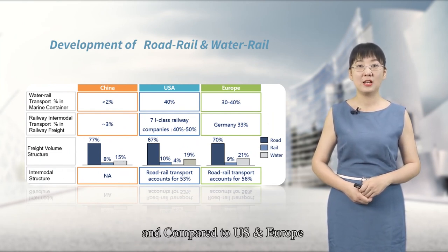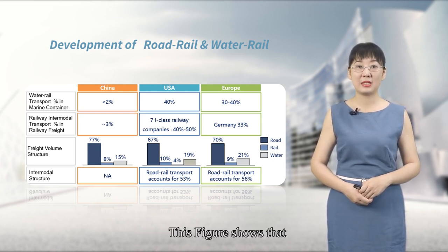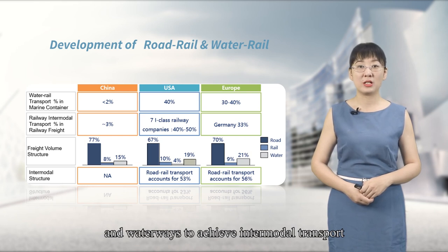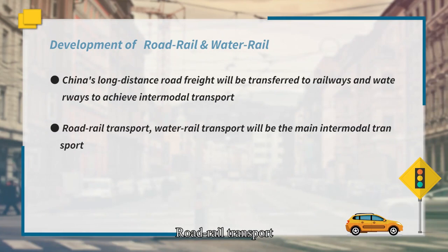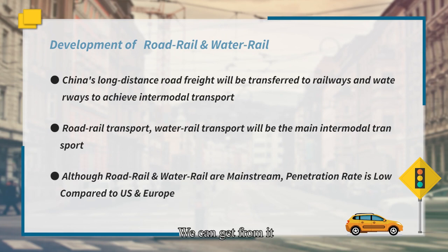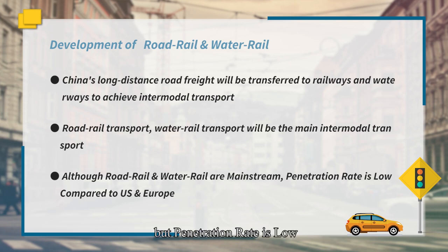In comparison to the US and Europe, the figure shows that China's long-distance freight will be transferred to railways and waterways to achieve intermodal transport. Road-rail transport and water-rail transport will be the main intermodal transport modes. We can see that road-rail and water-rail are mainstream, but the penetration rate is low compared to the US and European levels.